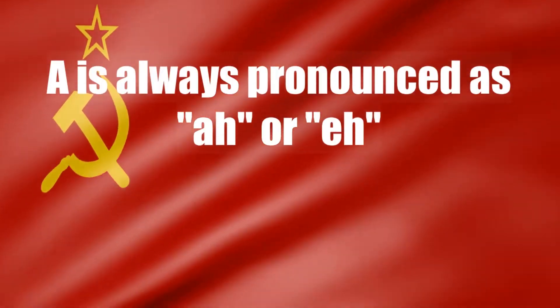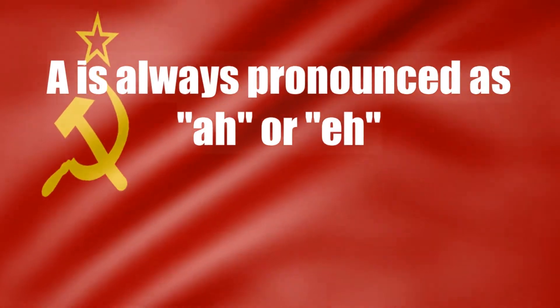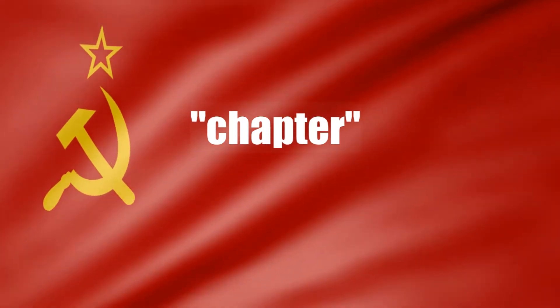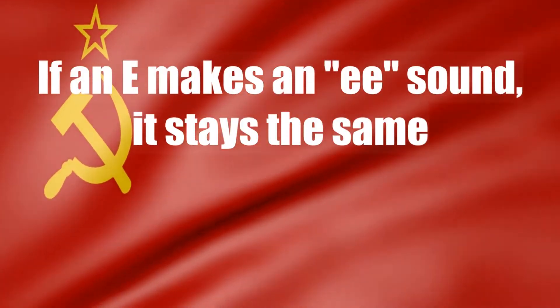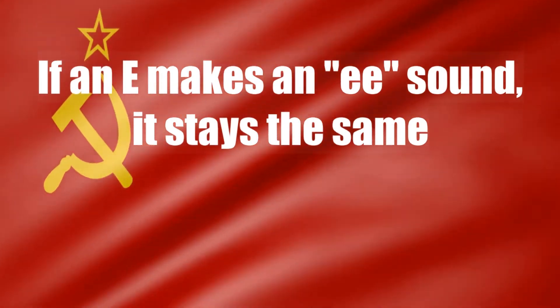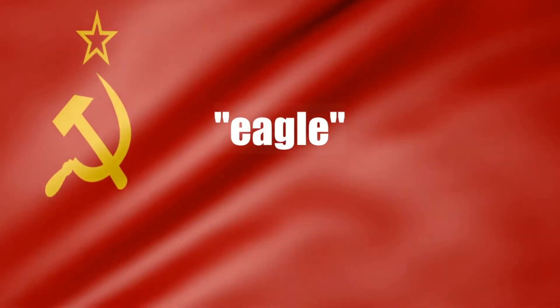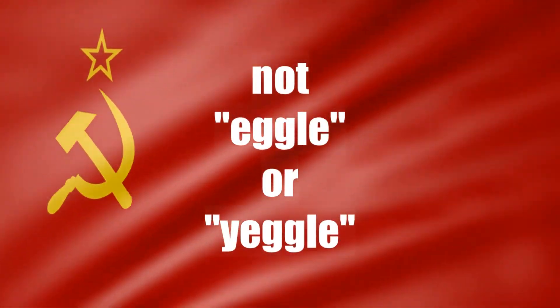Now for vowels — this can be tricky for beginners because of how flexible they can be, but for now just stick with what I'm about to show you. The letter A is always pronounced as 'ah' or sometimes 'a,' so words like 'chapter' become 'chaptehr.' The letter E must always be pronounced as 'eh' or 'yeh,' so 'bet' can become 'bit.' But if a letter makes an E sound, keep it the same — for example the word 'eagle' would stay as 'eagle,' you would not say 'eggle,' that sounds weird. Next, the letter I should always be pronounced as 'ee.'